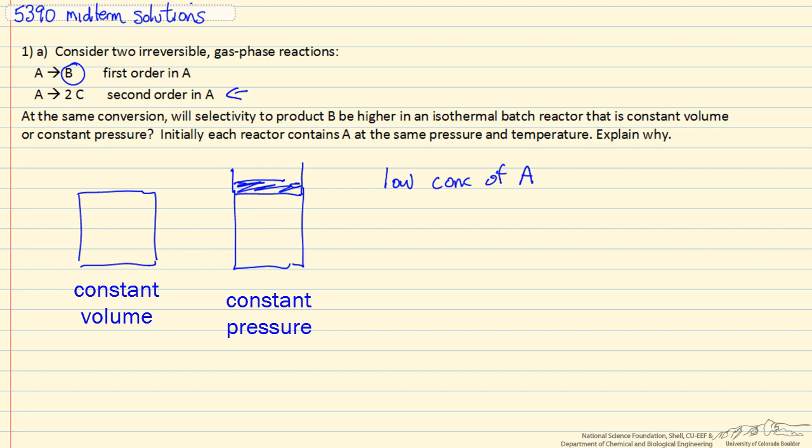the higher the selectivity, because the relative rates that we form B over the rates that we form C are going to be related to the rate constant for the first reaction divided by the rate constant for the second times C squared. So this is instantaneous selectivity. Higher concentration is going to give us lower selectivity.